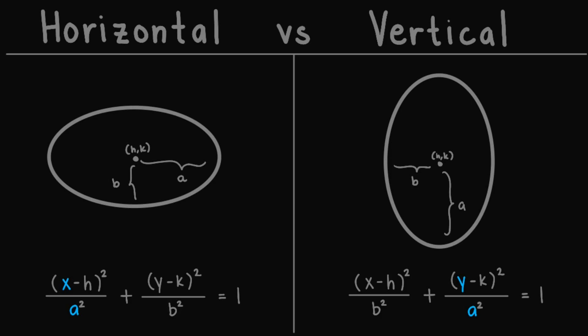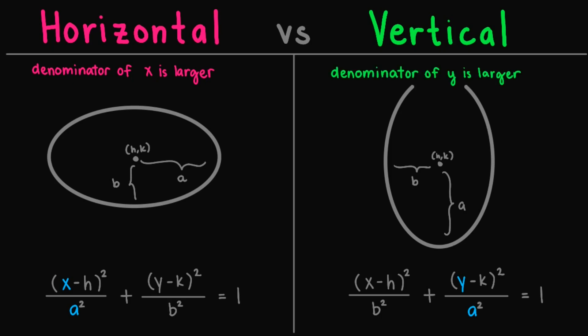That is, we'll have a horizontally-oriented ellipse if the denominator of x is larger compared to the denominator of y. And we'll have a vertically-oriented ellipse if the denominator of y is larger compared to the denominator of x in the equation of the ellipse. So that is what we need to remember — we just inspect the denominators.